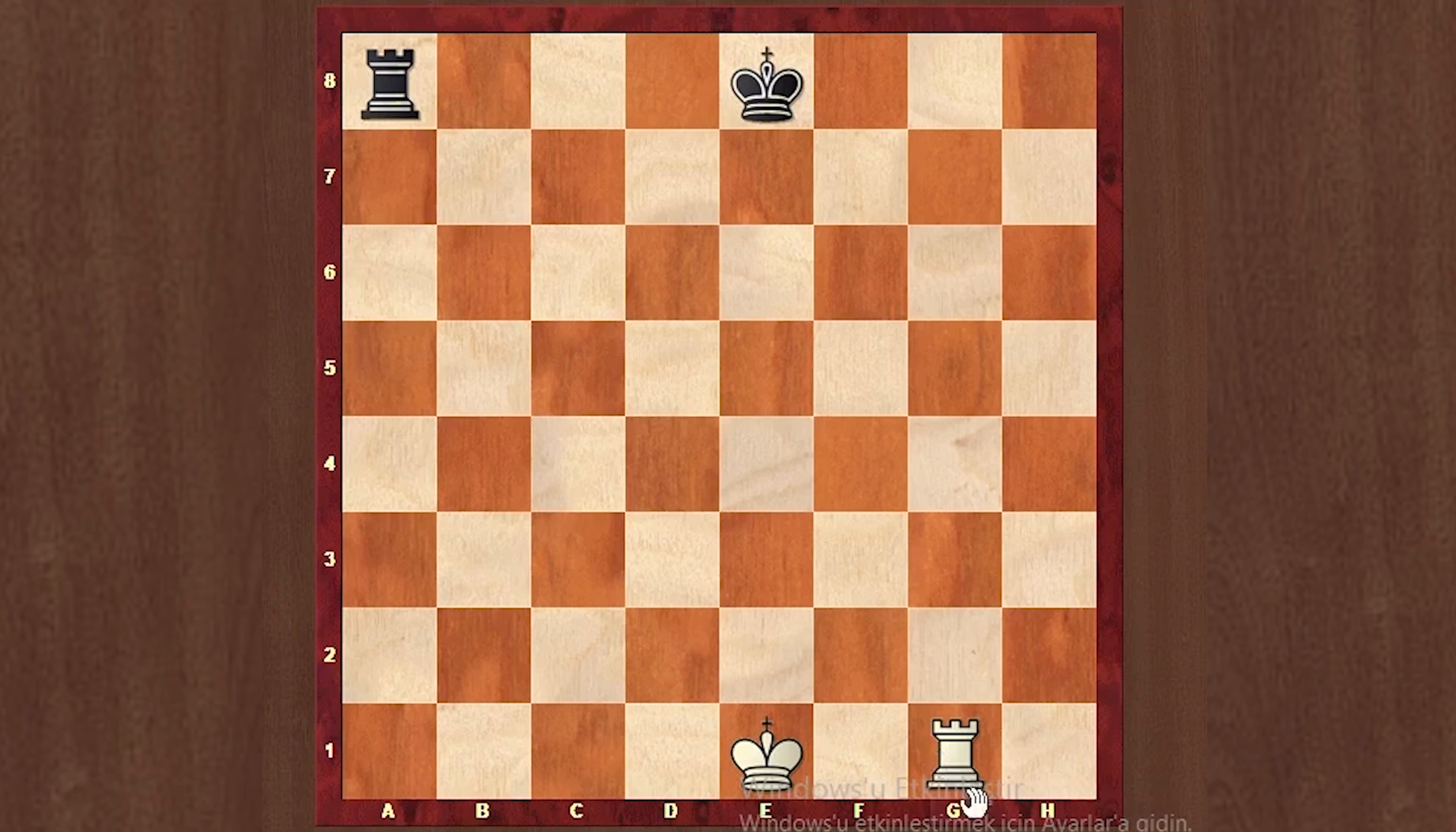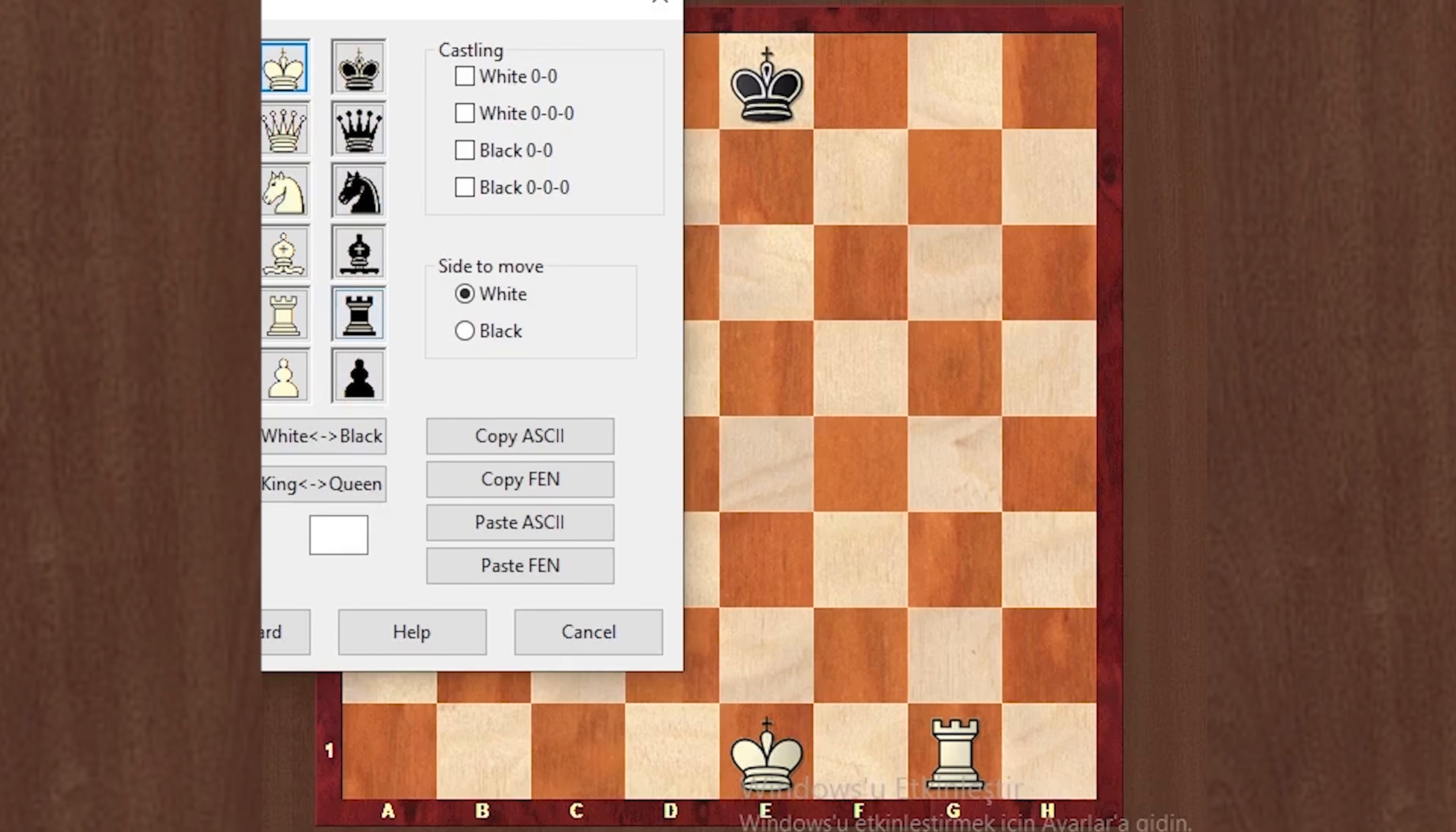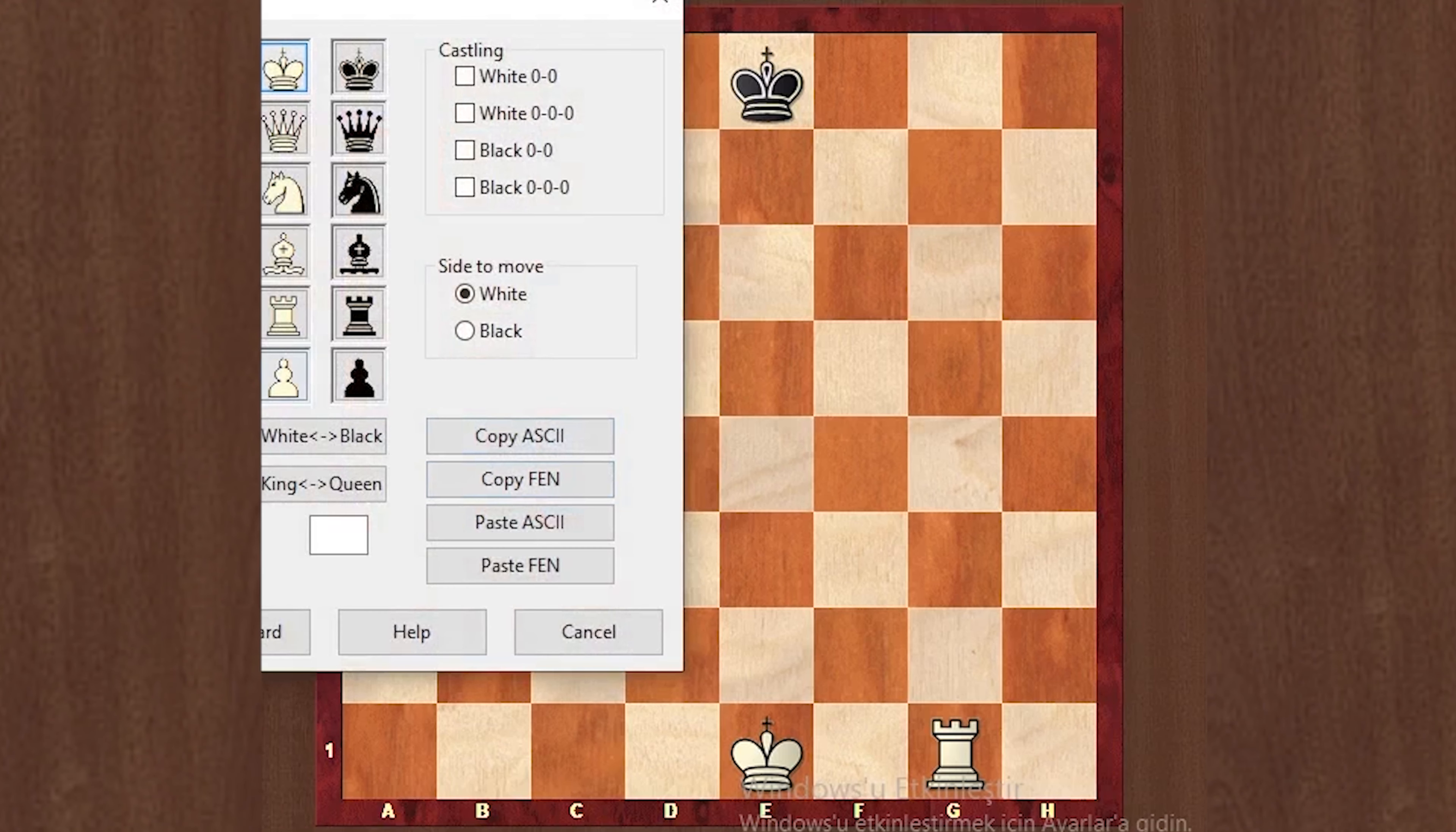Since we are practicing right now, we are practicing the movement of the rook. Normally, if a white player plays, a white piece moves, then black plays. But since we are studying the rook, we move the rook vertically or horizontally.